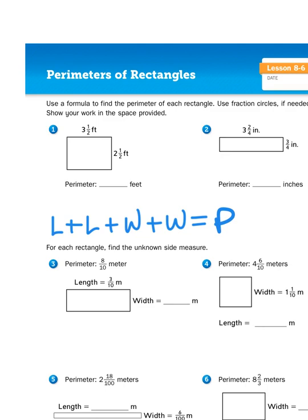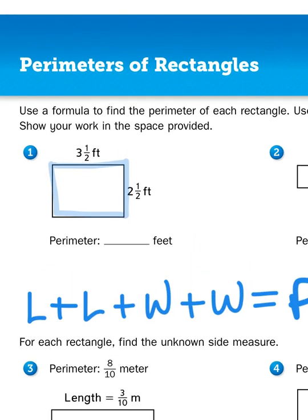So, for problem number one, we would have to just add the two lengths together plus the two widths together. Now, with most illustrations like this one, even though there are four sides, they only took the time to give you two measurements, the length here and the width here.